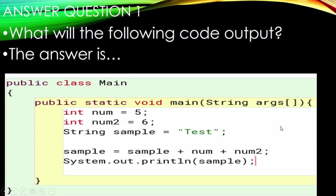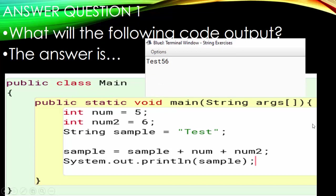It's time to go over the answers. Let's see if you can find the pattern. For number one — sample plus num plus num2 — we have integers being added to a string. The output is 'Test56.' It outputs 'Test,' then 5 (which is num), then tacks on 6 for num2. No spaces — just 'Test56.' The integers were not added together.